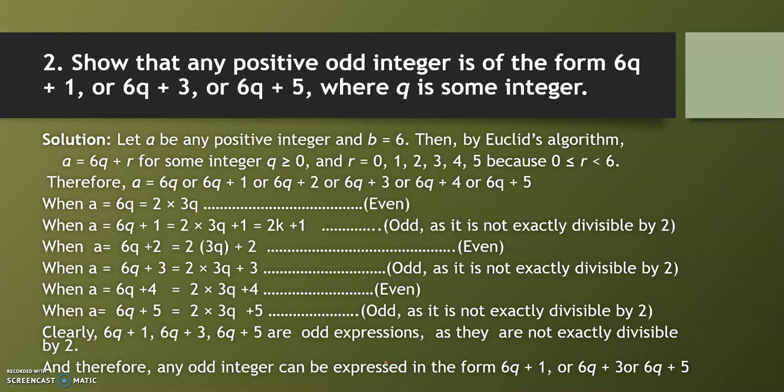Let's understand what this means. Odd integers are all integers which are not exactly divisible by 2. All integers divisible by 2 are even numbers, and those that are not are called odd integers.